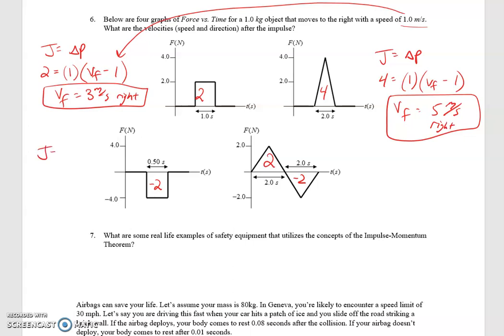Next one, impulse equals change in momentum, so negative 2 equals 1 times VF minus VI. Solve for VF, negative 1 meter per second. Or in other words, 1 meter per second to the left. And then your impulse for the last one is zero. So that means your final velocity is the same as it was in the beginning.